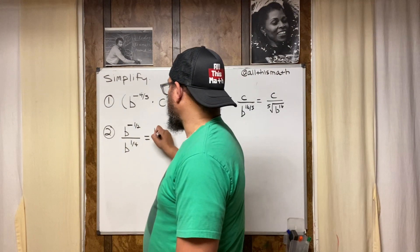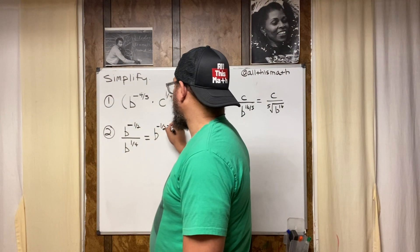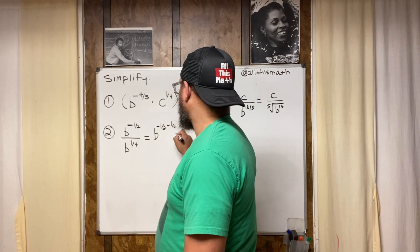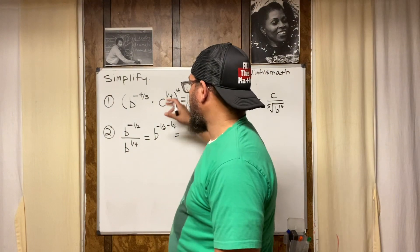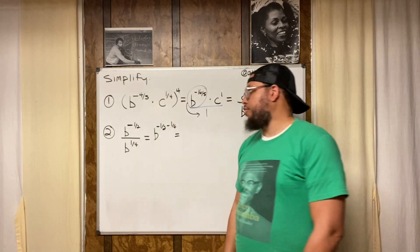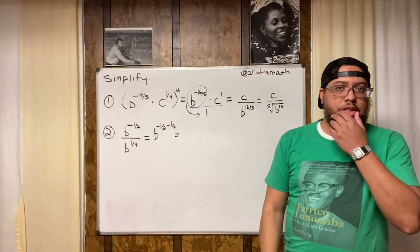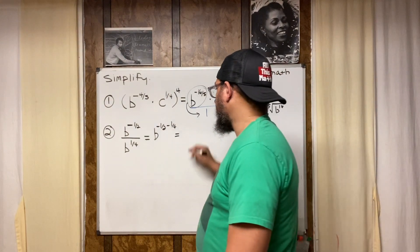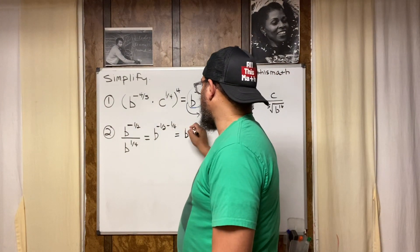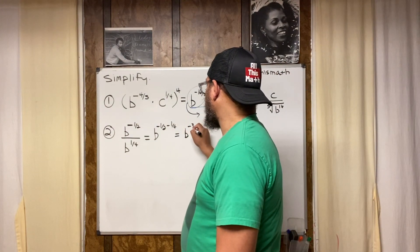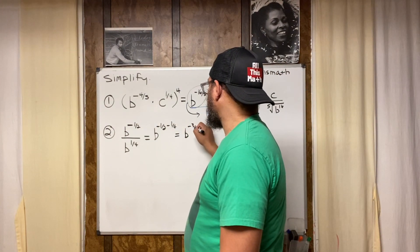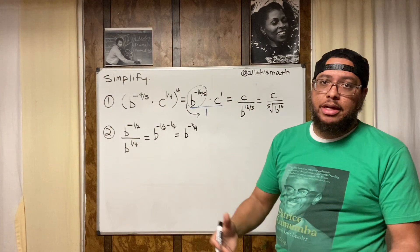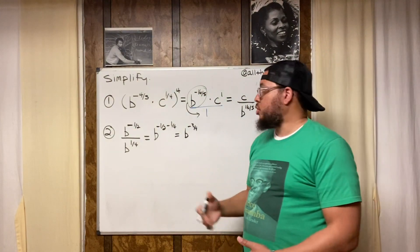That gives us b to the negative one-half minus one-fourth. Negative one-half minus one-fourth equals negative three-fourths. So we have b to the negative three-fourths.